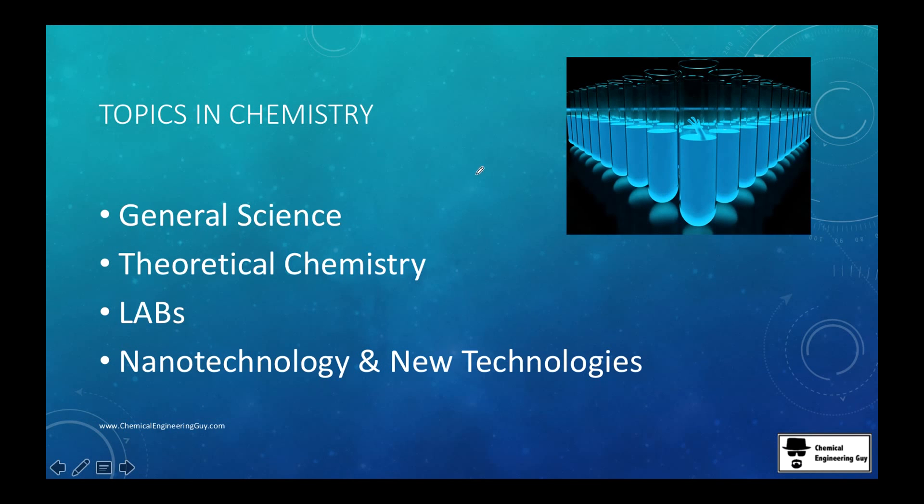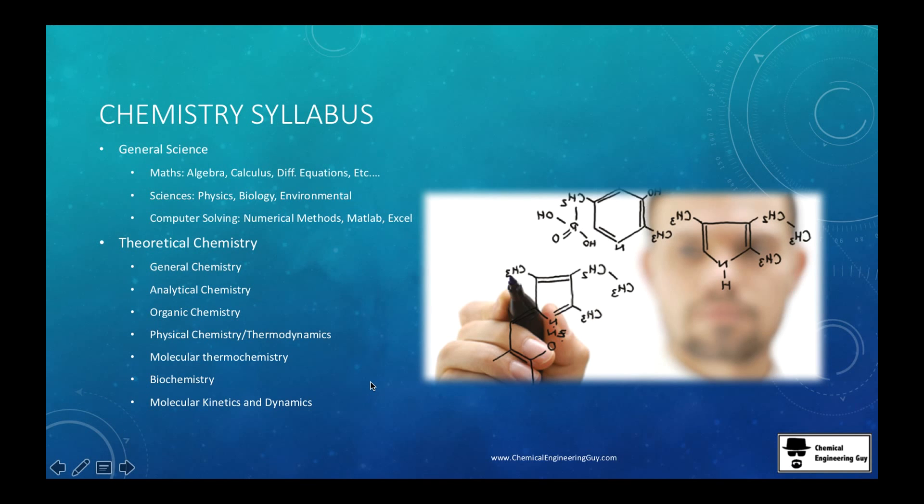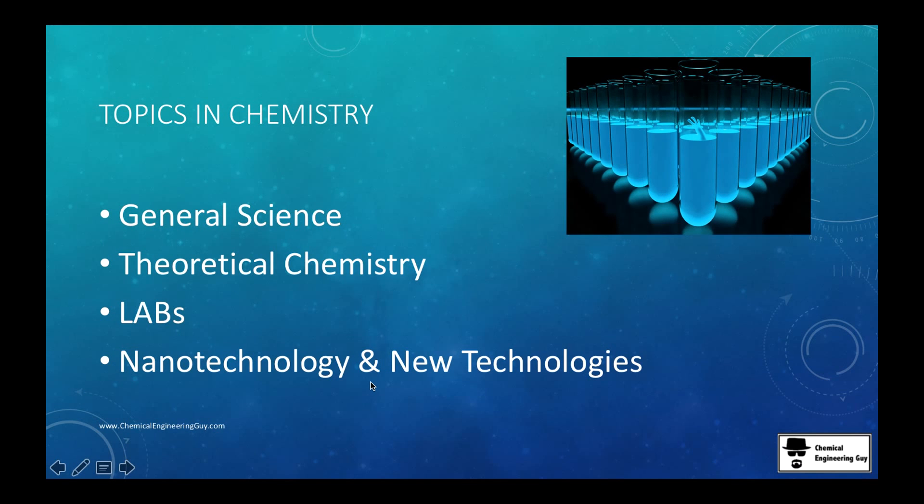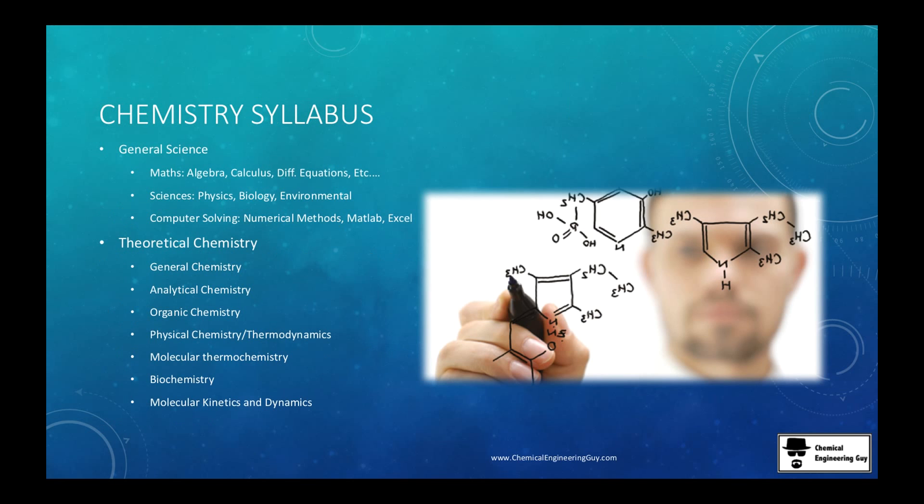Now that was chemical engineering. For chemistry we got these four blocks: general science, theoretical chemistry, plenty of labs, and new technologies which I like to call nanotechnology, biotechnology or genetics, whatever you want to call it. So I will say something more like applicable or that it has an actual application in real life.